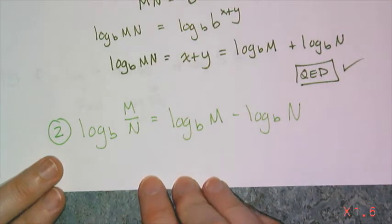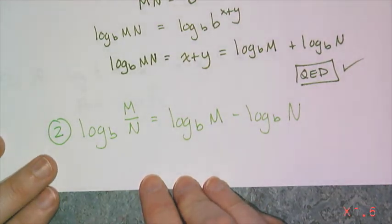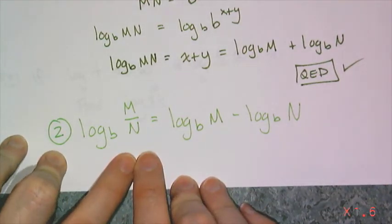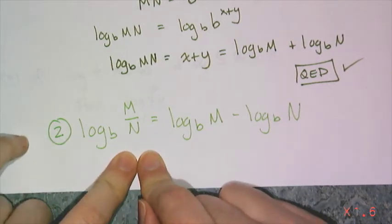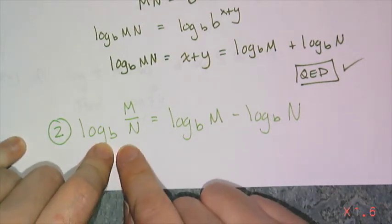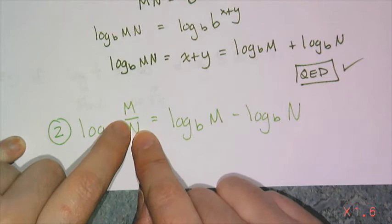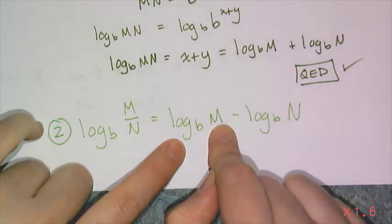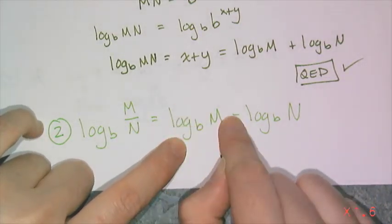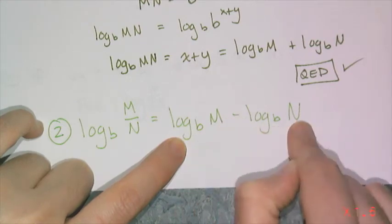Now if you recall the other basic exponent properties, we have the quotient rule which says I have to subtract the exponents. So if I'm taking the log base b of a quotient then I can split that up into subtraction. So log base b of m minus log base b of n.